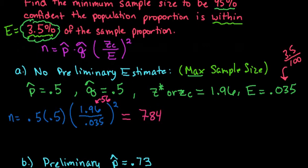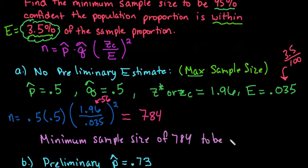For no preliminary estimate, we would need a minimum sample size of 784 to be within 3.5% at 95% confidence.